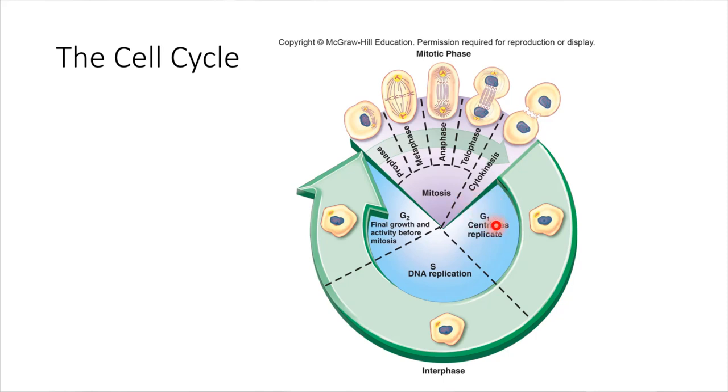The G1 phase of the cell cycle is the very first thing that happens, and this is where the cell is growing and going about its normal cellular business.